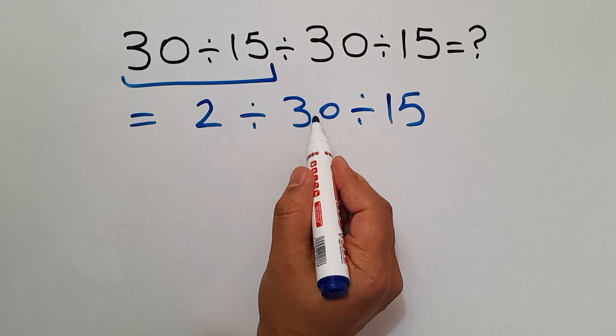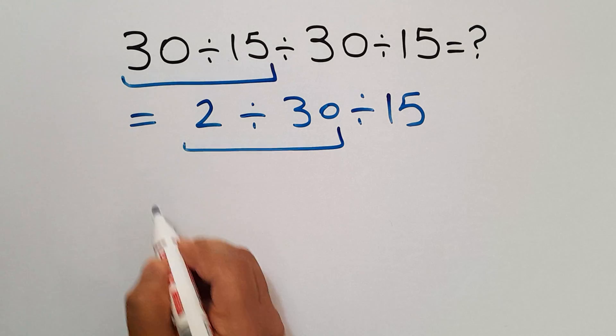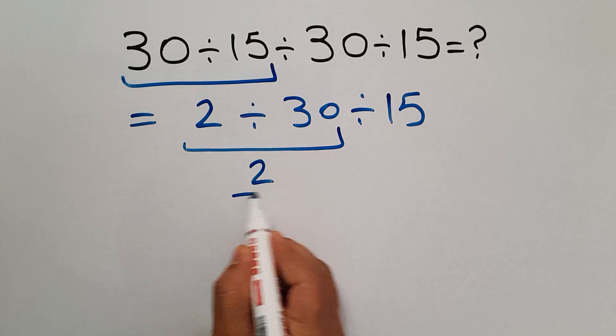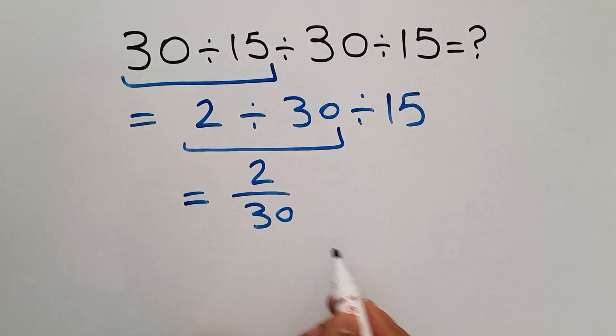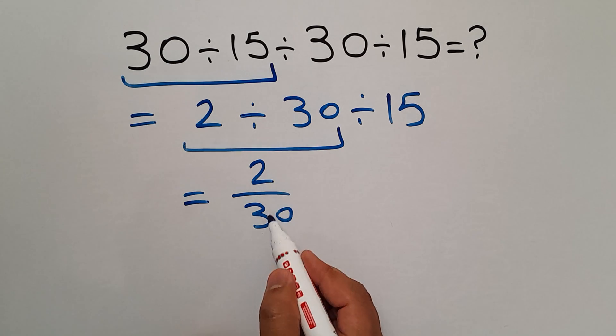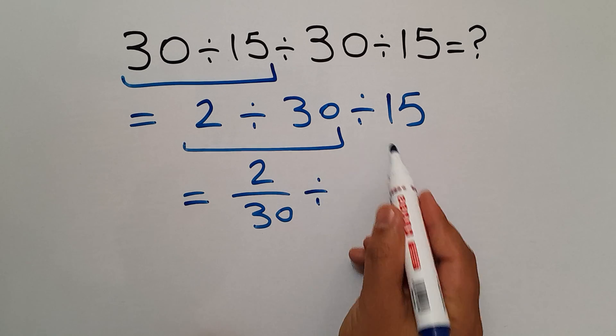Now 2 divided by 30, we can write 2 over 30. So we have 2 over 30 divided by 15.